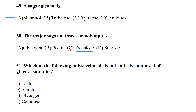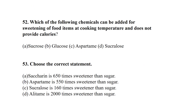A sugar alcohol is mannitol. The major sugar of insect hemolymph is trehalose. Which polysaccharide is not entirely composed of glucose subunits? Lactose is not entirely composed of glucose subunits because it is a disaccharide made up of glucose and galactose. Other polysaccharides such as starch, glycogen, and cellulose are made up of only glucose.